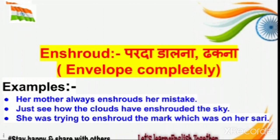Next vocabulary hai 'shroud,' which means pardha daalna ya dhakna — to envelope completely. Isko abstract sense ke saath bhi use kar sakte hain. Jaise parents apne bachche ki galtiyon pe pardha dalete hain, ya physically kisi cheez ko dhak rahe hain — jaise koi samaan, table, chair — usmein bhi shroud ka use kar sakte hain. Example: her mother always unshrouds her mistakes — us ladki ki maa hamesha uski galtiyon pe pardha daale rehti hai, unko chhupa deti hai.